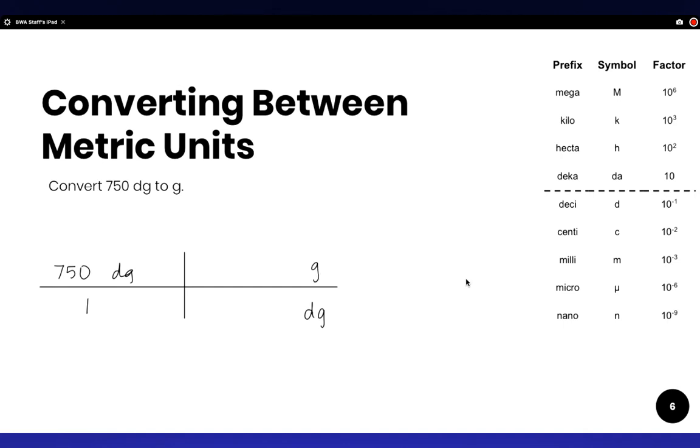Okay, so here you ask yourself, which one is bigger, grams or desigrams? So here's desigrams, 10 to the power of negative one, and then grams is represented by this line. So grams are actually bigger by one power of 10. So grams will get the value of one.